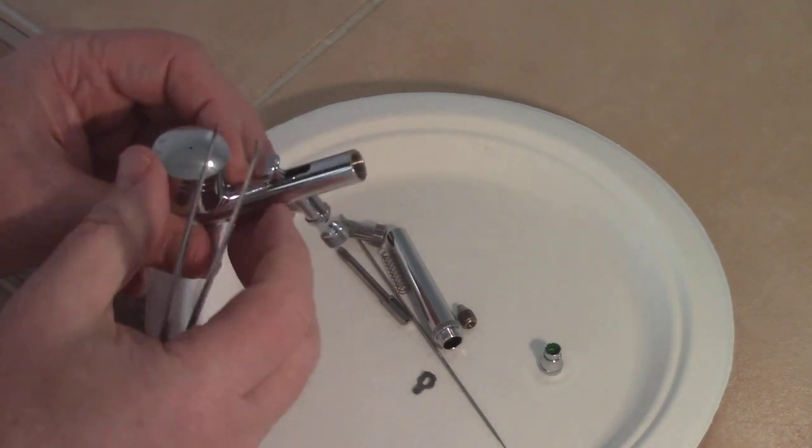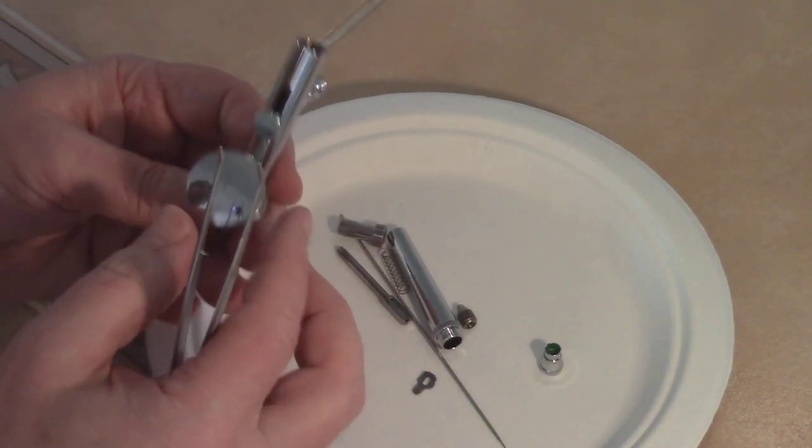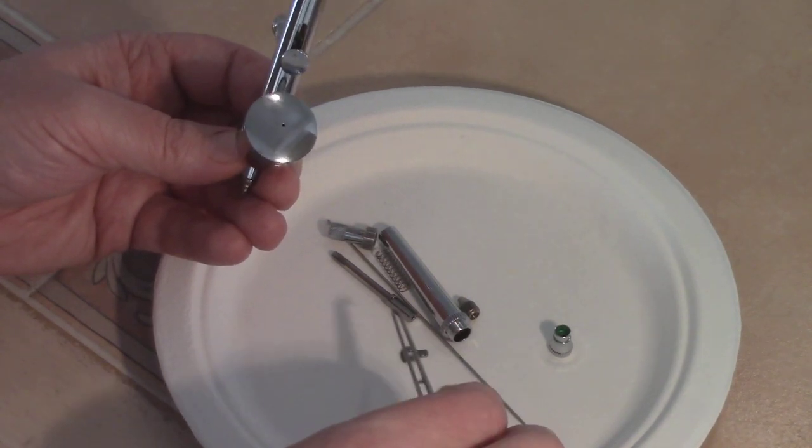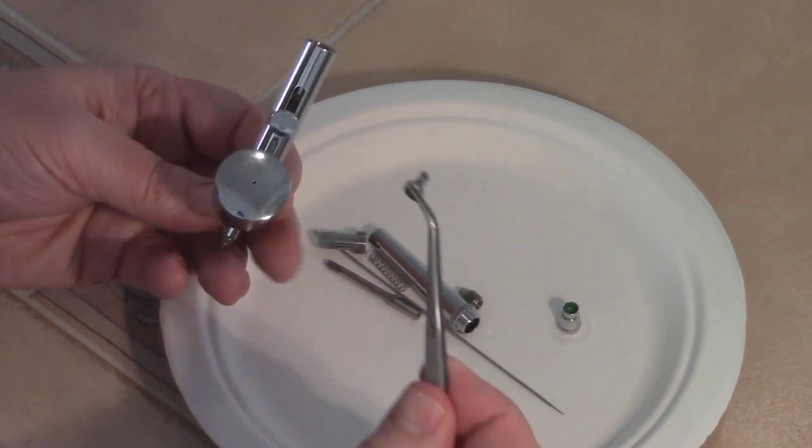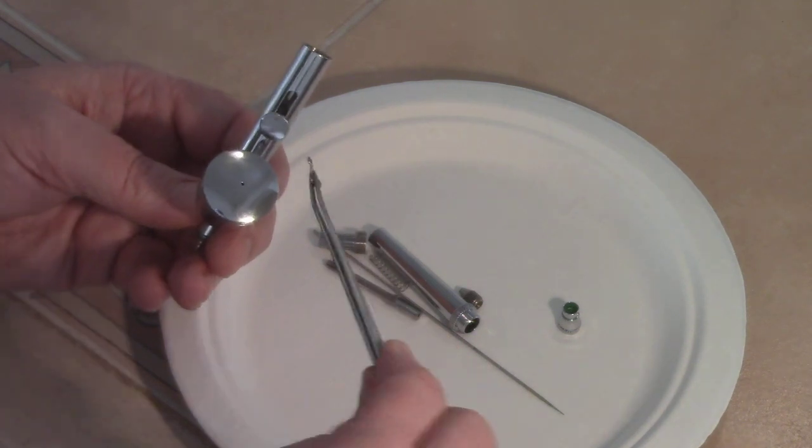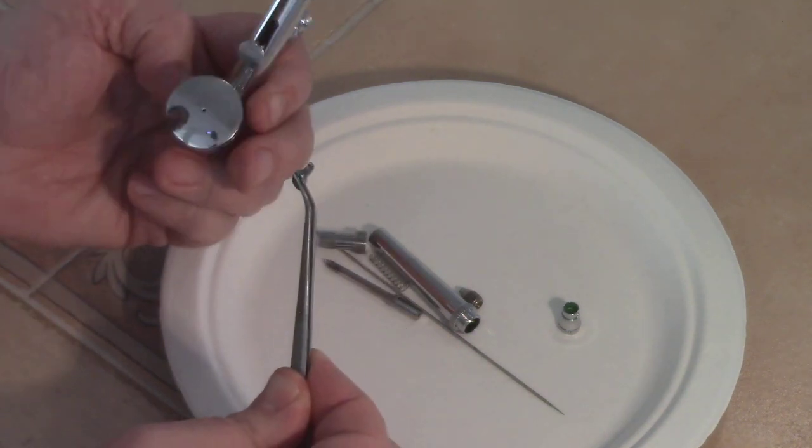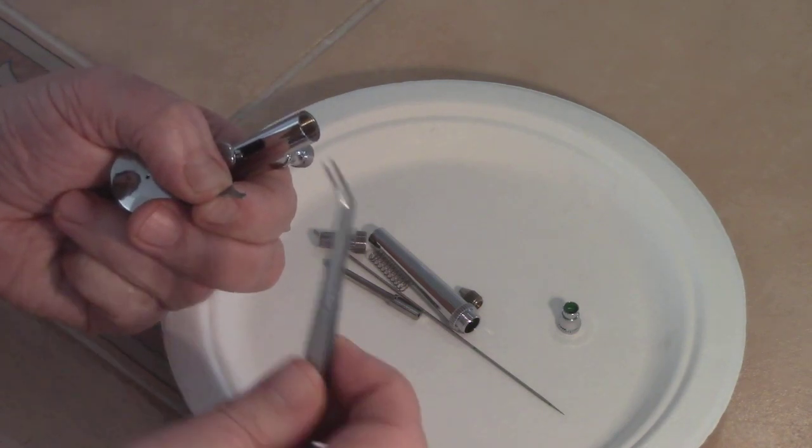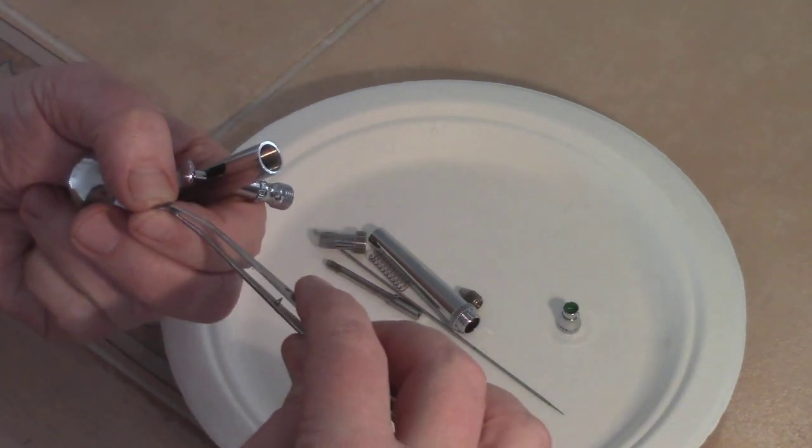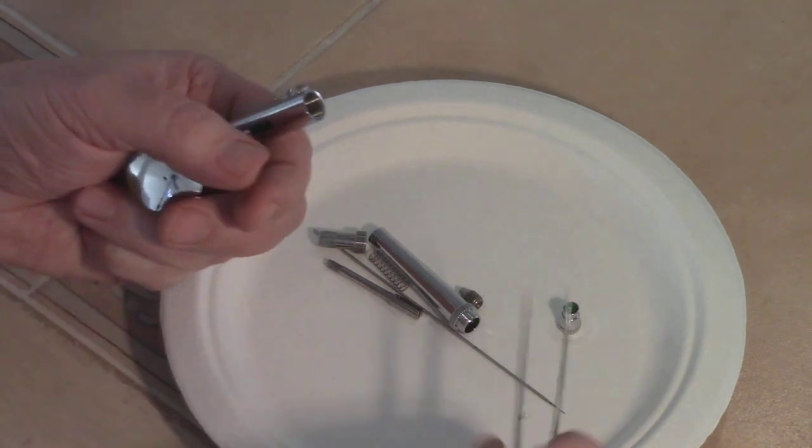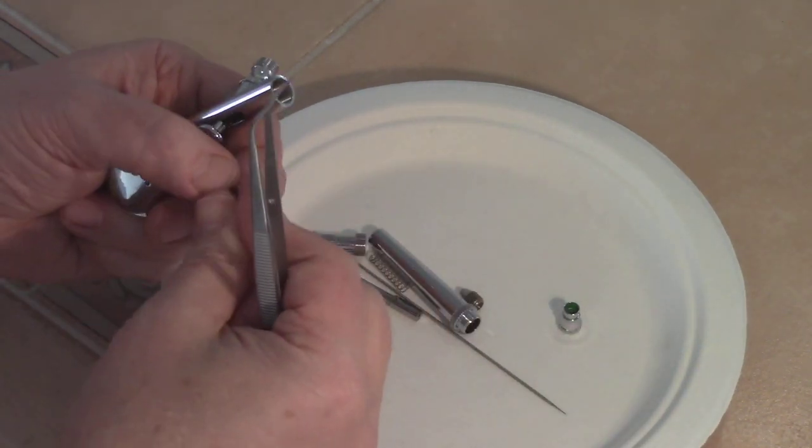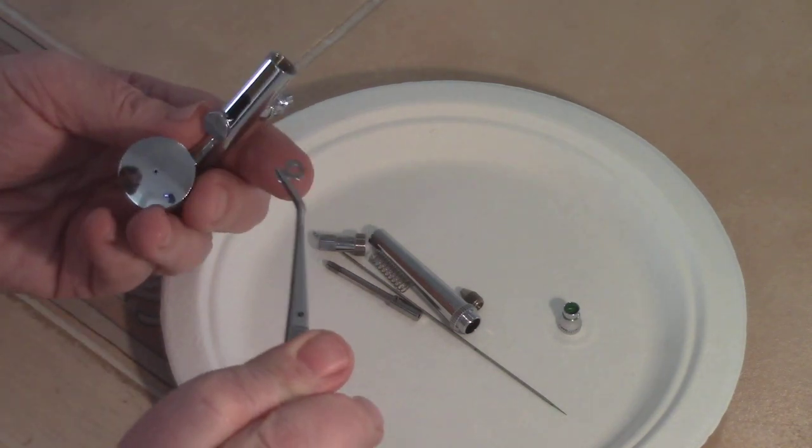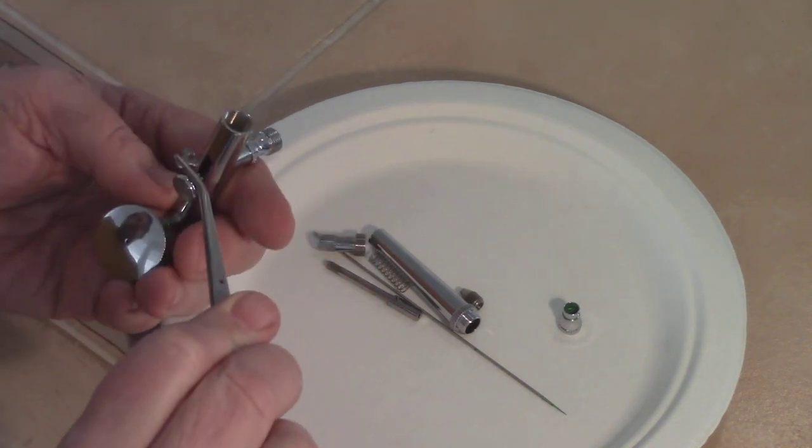Now, the critical part here is to take this little needle guide, and it's sort of got a hump to it. And the part with the hump, let me grab that again. The part with the hump goes away from the bowl, it goes up.